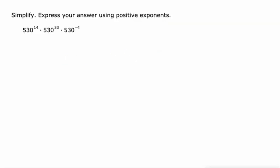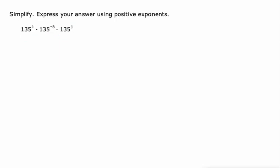Then we get into some problems that have repeated multiplication—more than one set of multiplication here—but 530 is the base for all three of those expressions, and we're multiplying all three of them together. So we'll just do 14 plus negative 4 is 10, plus 33 is 43: 530 to the 43rd power.